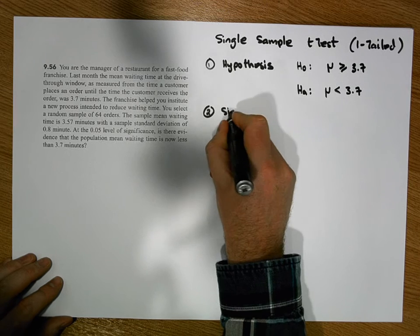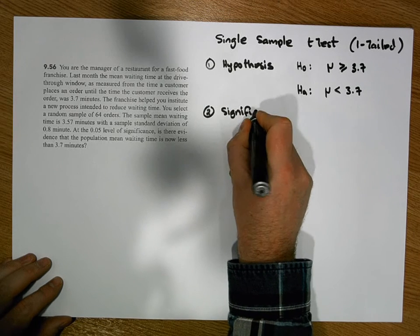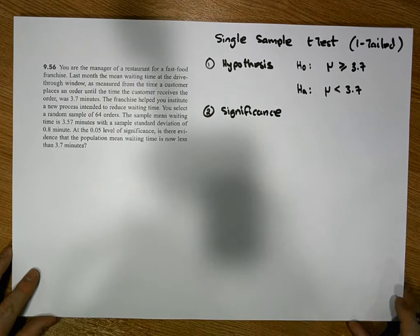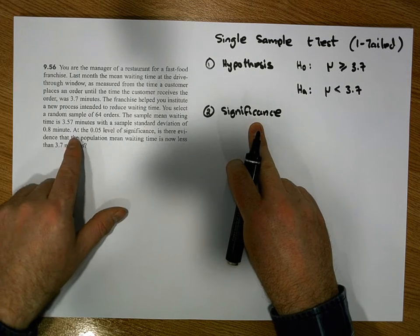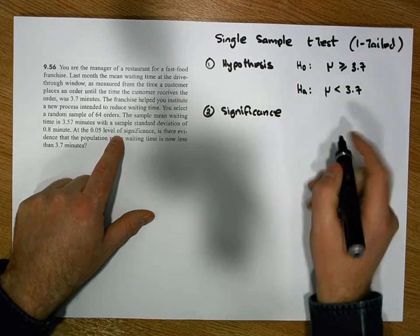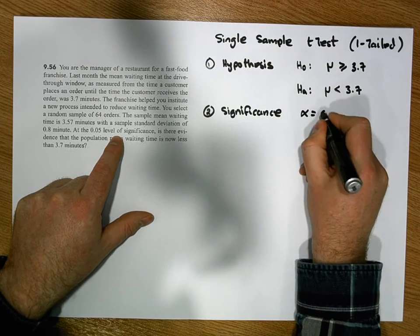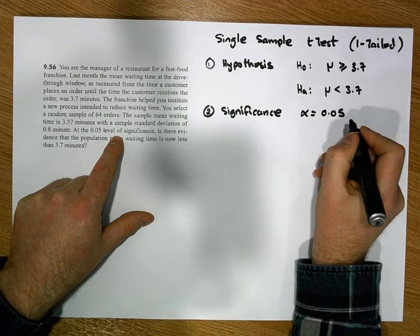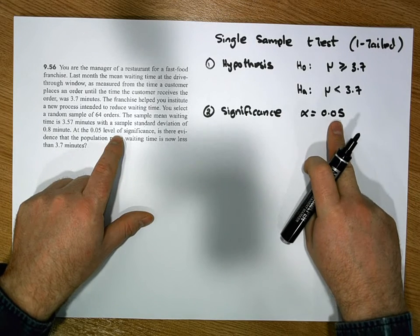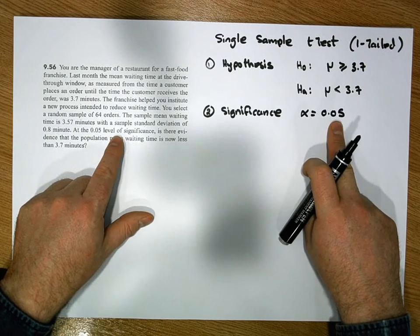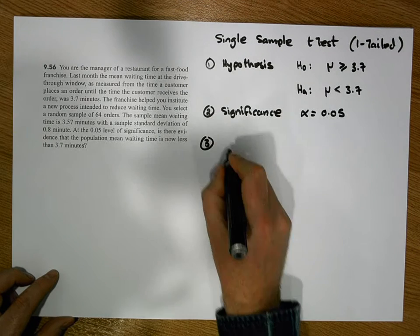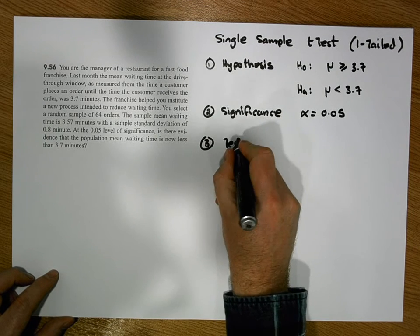Step two is to set our significance level, which is given in the scenario or chosen before conducting experiments. The significance level is alpha equals 0.05. Because it's a left-tail test, we are placing 0.05 of the area in the left tail.